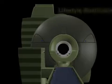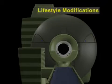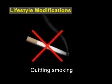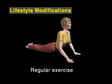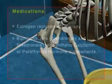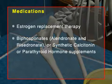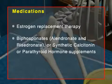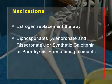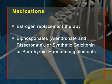Osteoporosis can be treated by changes in lifestyle, like quitting smoking, regular exercise, and a balanced diet, and by taking medications such as estrogen replacement therapy, bisphosphonates, alendronate, and risedronate, or synthetic calcitonin or parathyroid hormone supplements. Thank you.